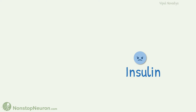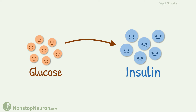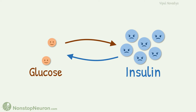Hello, in this video we will see the mechanism of insulin secretion. We know that insulin is involved in control of blood glucose level. The higher the blood glucose, the more the insulin secretion. This insulin in turn decreases blood glucose level. But how exactly does increased blood glucose increase insulin secretion? That is what we will see in this video. Let's get started.